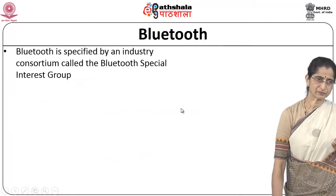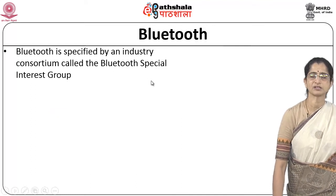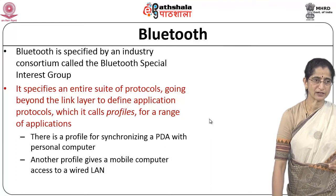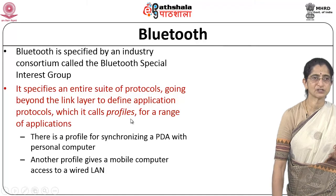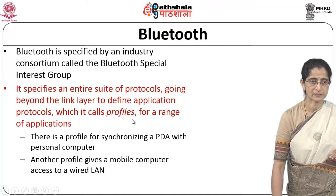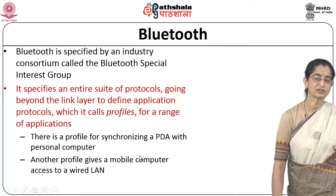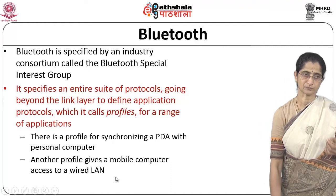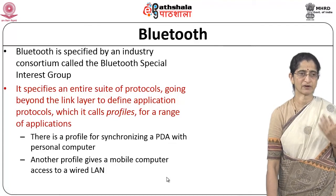The Bluetooth specification is given by an industry consortium called the Bluetooth Special Interest Group. What they specify is not just a layer-2 or link layer mechanism, but a complete suite of protocols including application protocols, which they refer to as application profiles. These profiles, for instance, could specify how to synchronize a PDA with a personal computer, or how to connect a mobile computer with a wired LAN. So different application profiles are specified as part of Bluetooth.